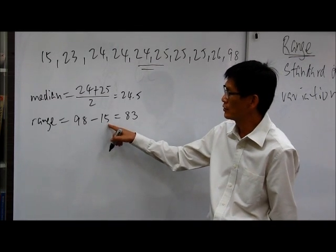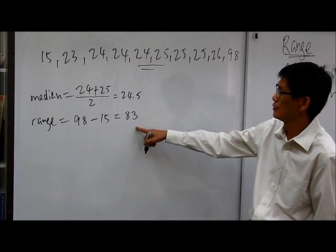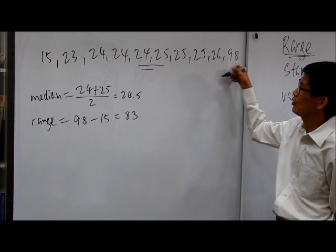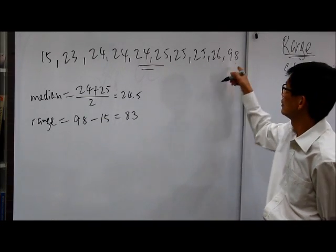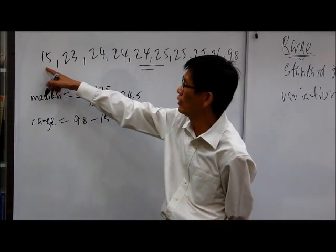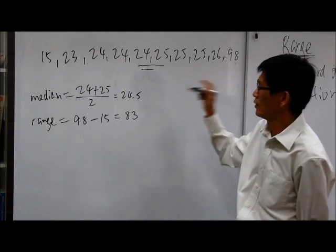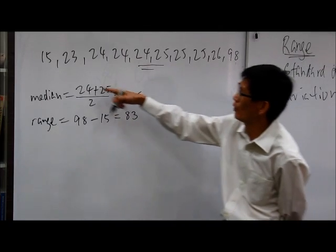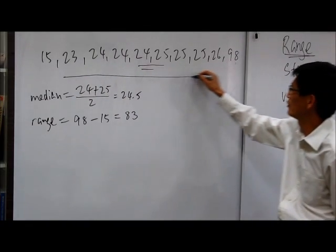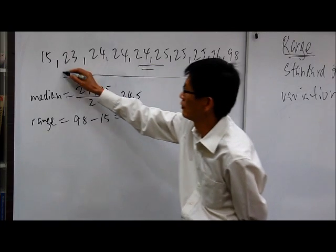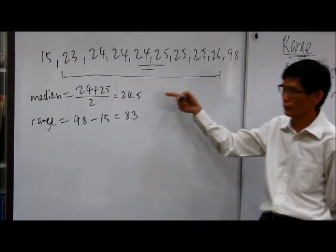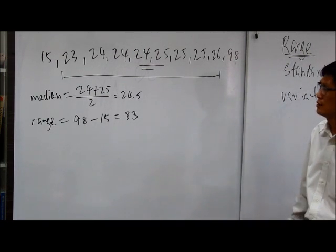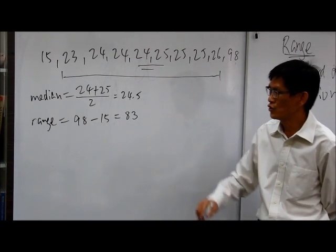This range doesn't quite make sense. Reason being, the largest number is actually way above the median. And there's a time taken that's very short, 15 minutes. The median makes sense because 24 and a half minutes is somewhat close to these numbers. They're all 20-something minutes. So the median of 24.5 is quite a sensible median, quite a good measure of central tendency. Whereas the range doesn't.